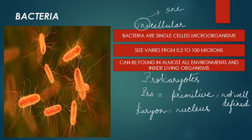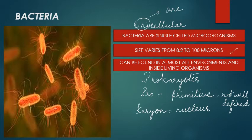The size of bacteria varies from 0.2 to 100 microns. Importantly, they are adapted to all types of habitats — they are found everywhere organic matter is present, such as ocean bottoms, hot springs, dry deserts, and inside and outside the bodies of other organisms.